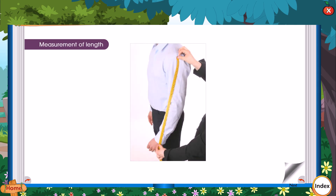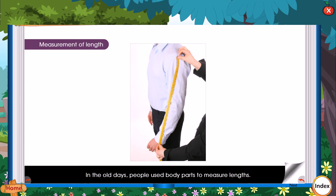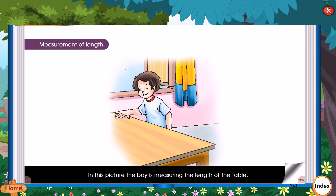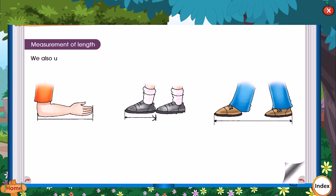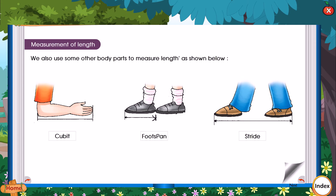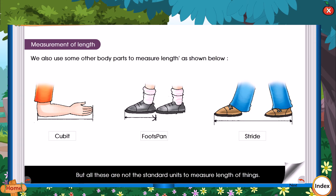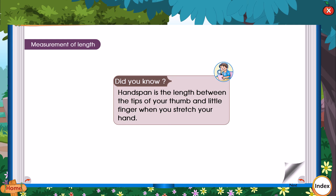Measurement of Length. In the old days, people used body parts to measure length. In this picture, the boy is measuring the length of the table using his hand. This unit is called handspans. This table is around 6 handspans. We also used other body parts: cubit, foot span, and stride. But all these are not standard units to measure length. A handspan is the length between the tip of your thumb and little finger when you stretch your hand.